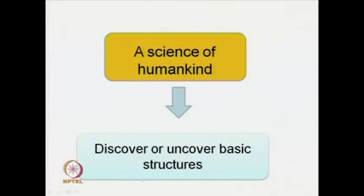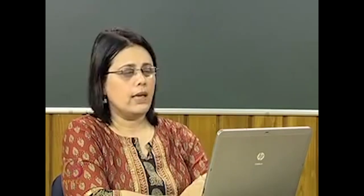The first thing to note is structuralism is a science — by science here I do not mean that it is a branch of the sciences like physics, biology, or chemistry. It is a science in that it is a systematic, rational, logical study of humankind. Even in the humanities and social sciences, there are theories that at least aim to look in a systematic way at the cultural products of humankind. So we may first define structuralism as a science of humankind. What is the goal of structuralism? The goal of structuralism is to discover or uncover basic structures.